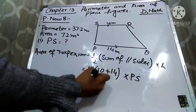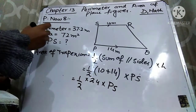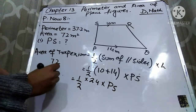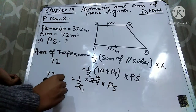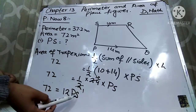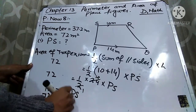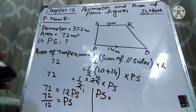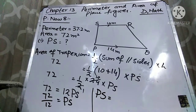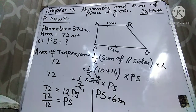When I add 10 and 14, I will get 10 plus 14 equals 24, multiply by PS. In place of area of trapezium, I will put its area which is 72. Two twos are 4, so 72 is equal to 12 PS. We have to find out the value of PS, so 72 divided by 12 will be 6. The length of PS is 6 meters.